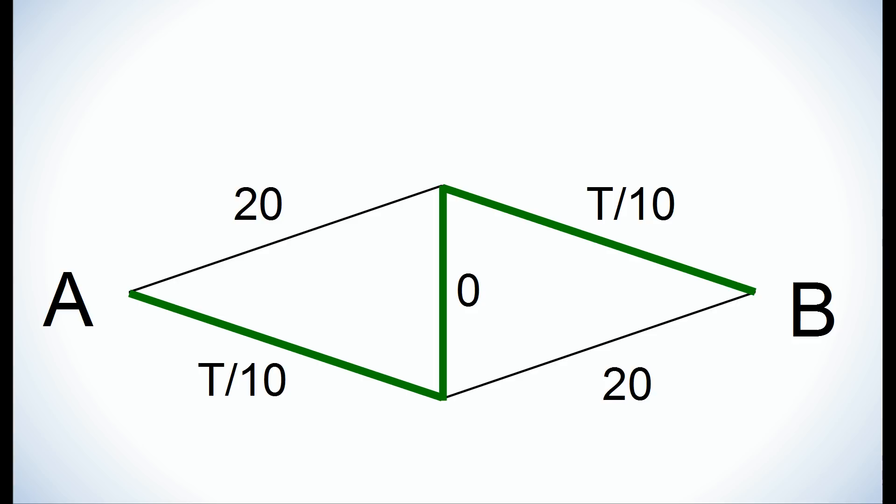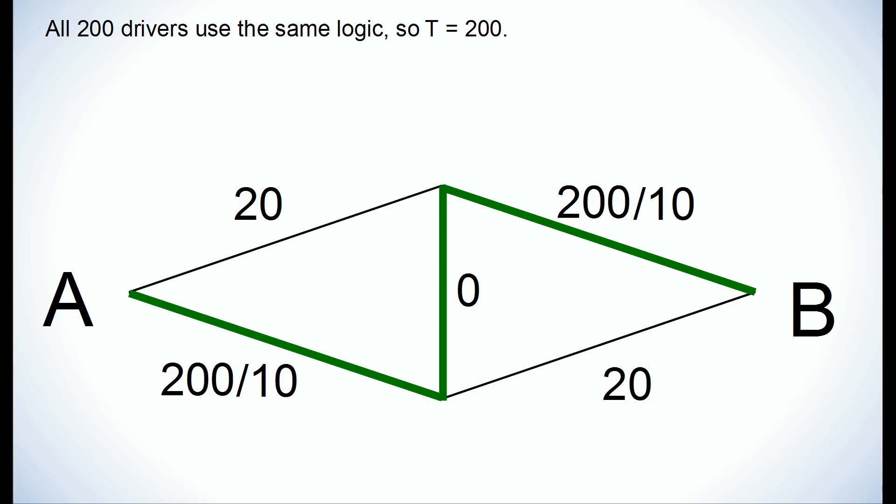This logic holds true for every driver, and therefore we can conclude that all 200 cars take the same route. This means that T will equal 200. We can substitute that value in and calculate that the roads that depend on traffic take 20 minutes each. Adding it all together, that means the travel time from A to B will be 40 minutes.